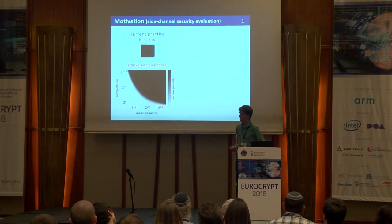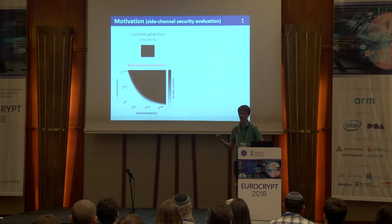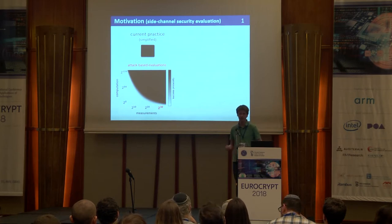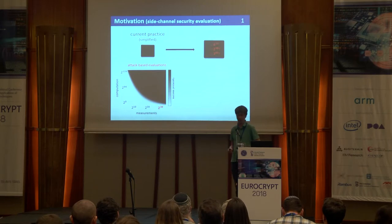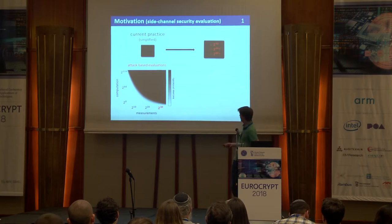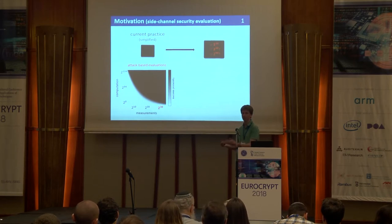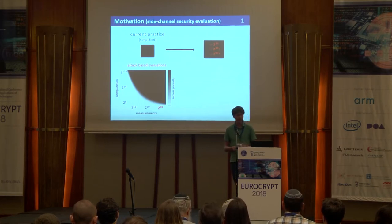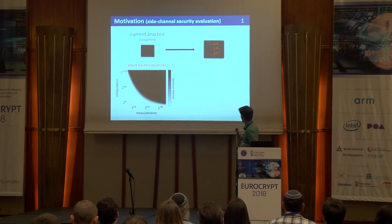In this example, with 2^30 measurements — like days to weeks of computation — we recover the key with good probability and little computation. The situation we are interested in is when this does not hold. With those 2^30 measurements, essentially what the lab can afford, we don't recover the key. That may mean different things: maybe you just need a little more, like 2^40, or maybe it's an extremely secure implementation where even 2^80 measurements won't get the key, which would be much better.